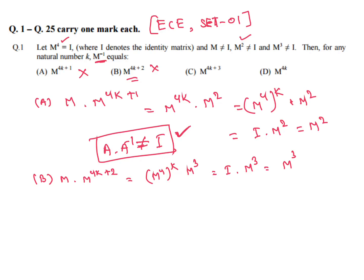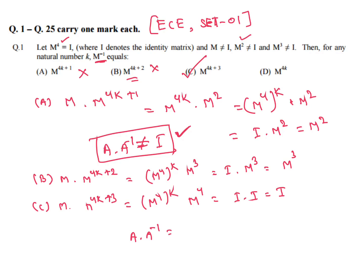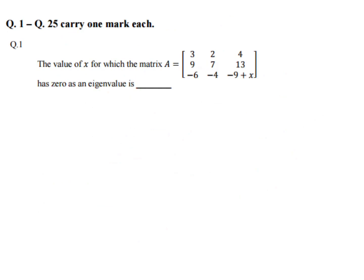For option C: M into M to the power 4k+3 equals M to the power 4k into M³ into M, giving I into I equal to I. This is satisfied, so C is the answer. A into A inverse equals I is satisfied. C is the answer.